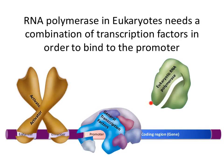The RNA polymerase of eukaryotes doesn't have a sigma subunit. Instead, it needs transcription factors to bind to the promoter region first, and then the polymerase can bind. It needs the right combination of transcription factors located on the promoter before RNA polymerase can bind and start transcription. Other proteins, like activators, can bind to enhancer regions and increase the chances of transcription happening.